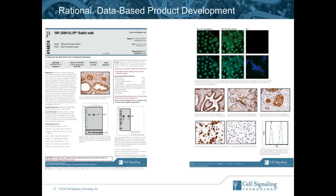This is a typical data sheet — the same information is available on our webpage. On this data sheet, we show information about the approved applications and the tested species that the antibody has been used in. When we say approved applications, that means these are the applications we've tested this antibody in and the antibody has passed. We don't indicate any applications that have failed or were not tested — if you need that information, you can call our tech support line. We also indicate the species the antibody works against. By default, we always test in human, mouse, and rat. If we list a species in parentheses, it means the antigen is 100% identical over that antigenic range.